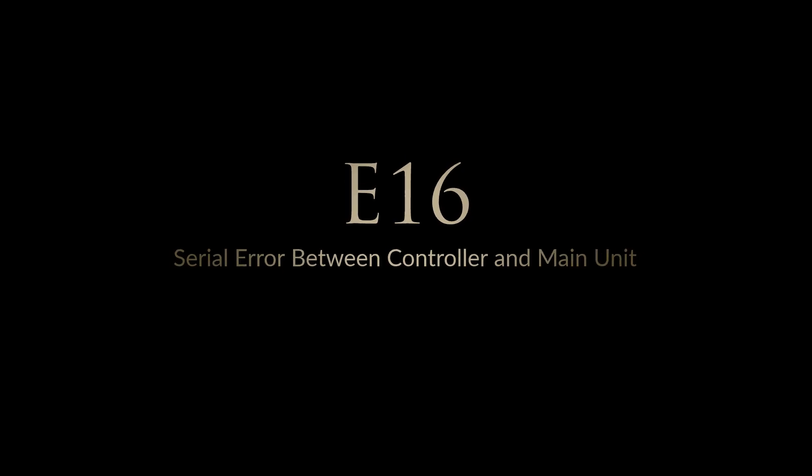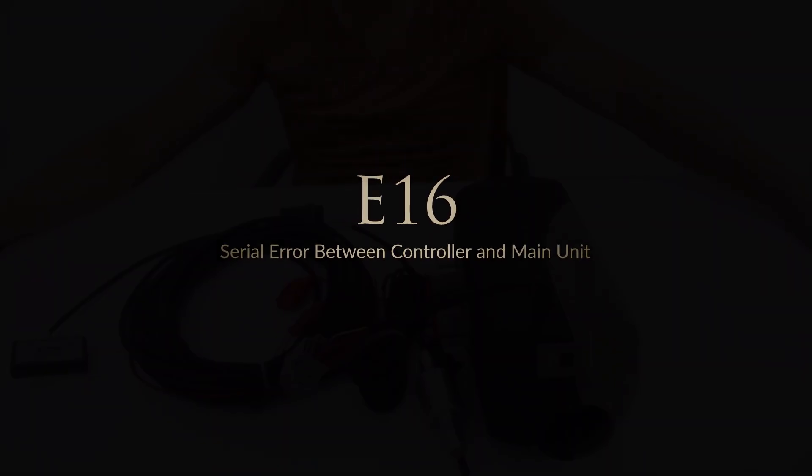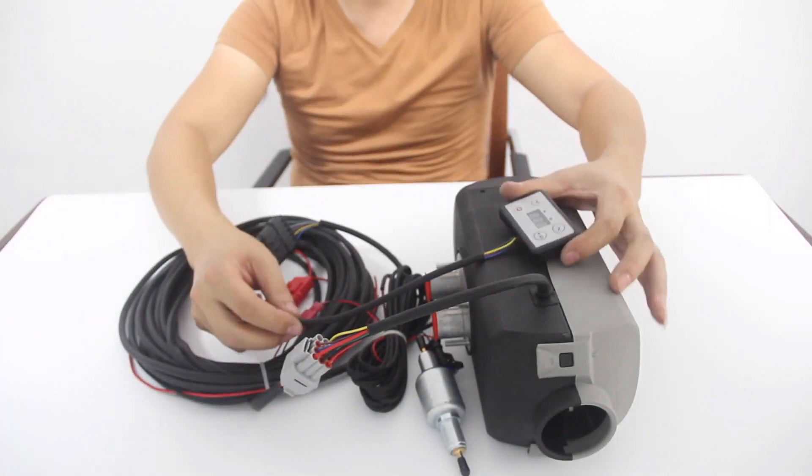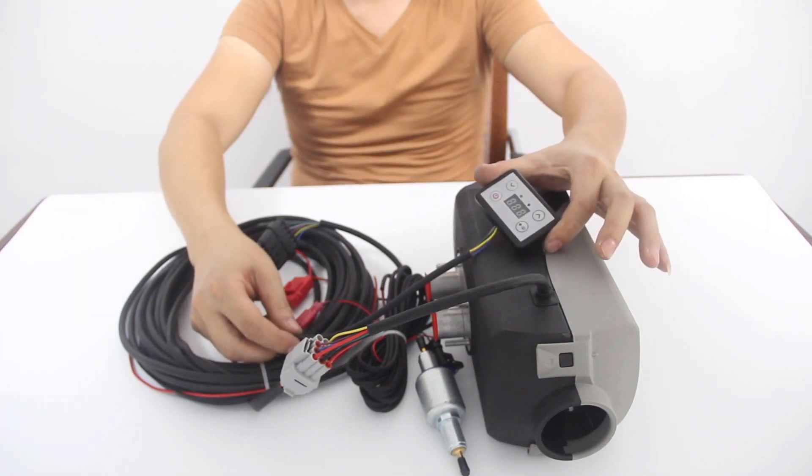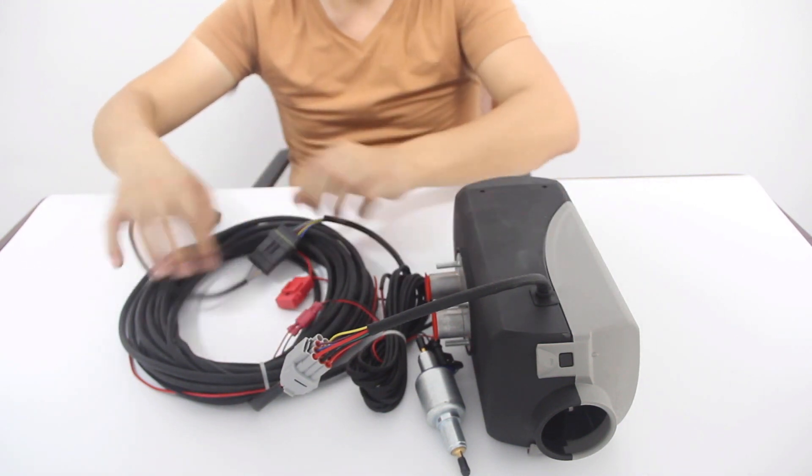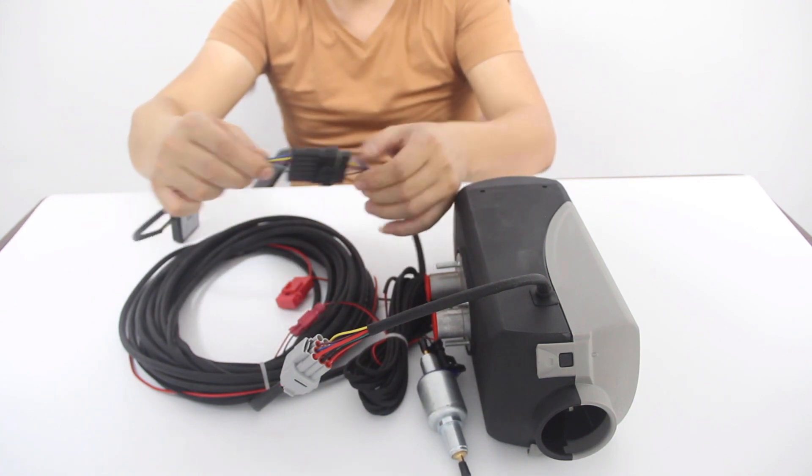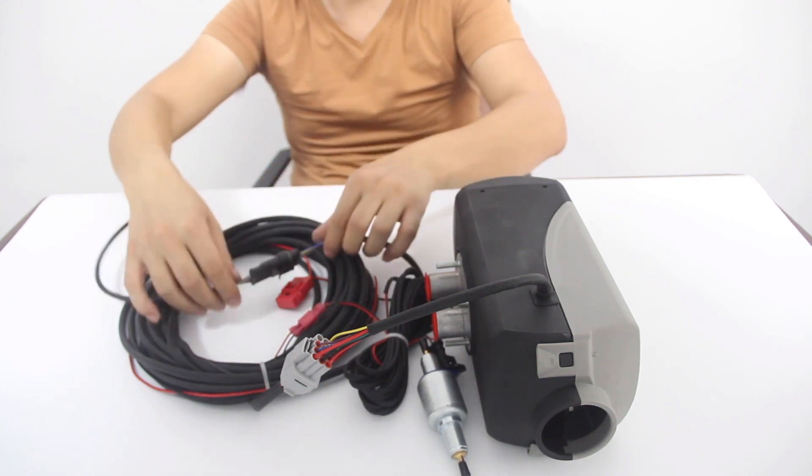Error code 16, serial error between controller and main unit. There are two possible reasons that can cause error 16. The first possible reason could be that the main controller board doesn't match the internal motherboard of the heater. The second reason could be that the wire in the plug for the controller may be loose, causing a faulty or no connection.